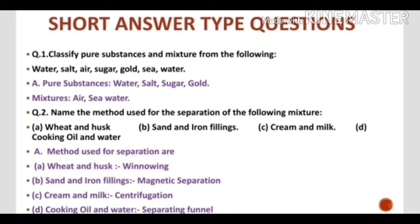Question No. 2: Name the method used for the separation of the following mixtures — Wheat and husk, Sand and iron fillings, Cream and milk, Cooking oil and water. Answer: Wheat and husk are separated by winnowing. Sand and iron fillings are separated by magnetic separation. Cream and milk are separated by centrifugation. Cooking oil and water are separated using a separating funnel.